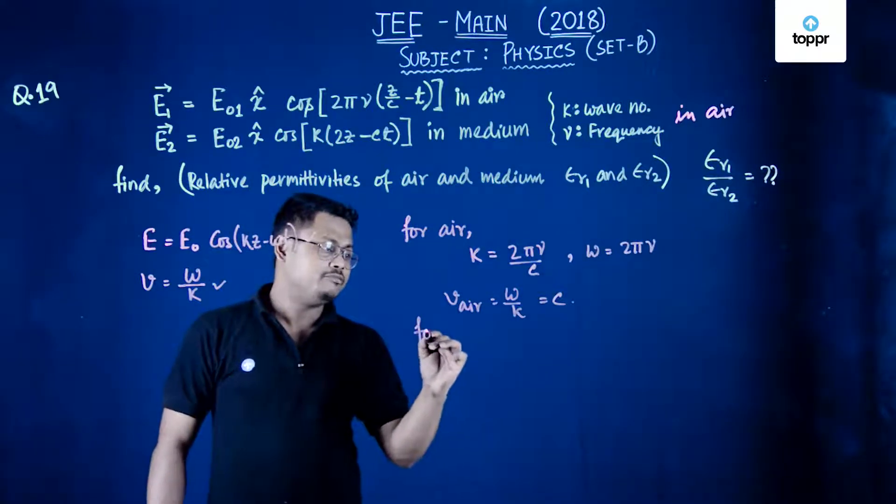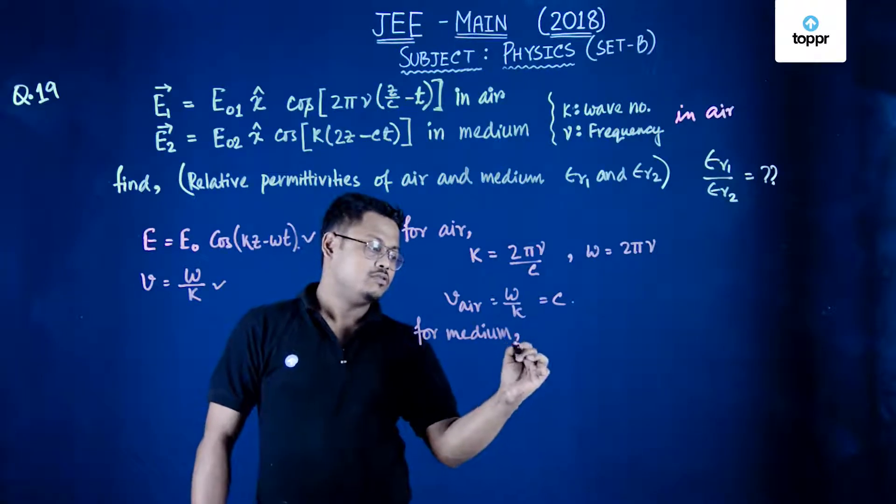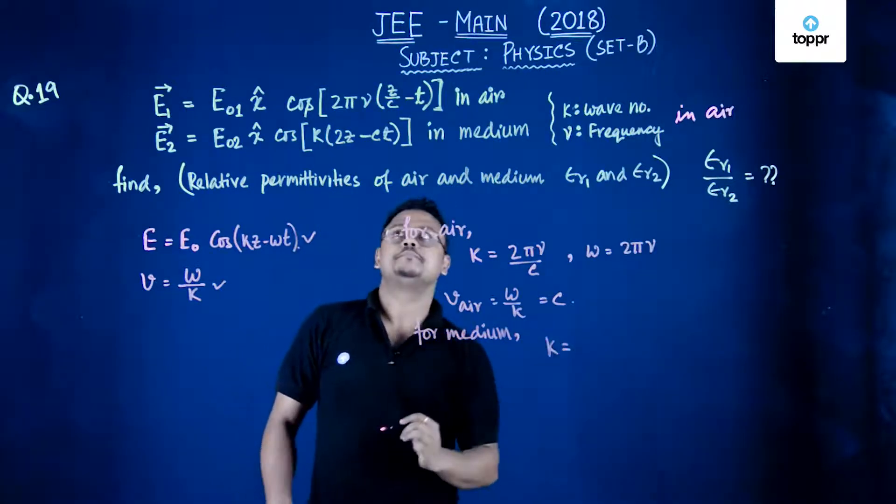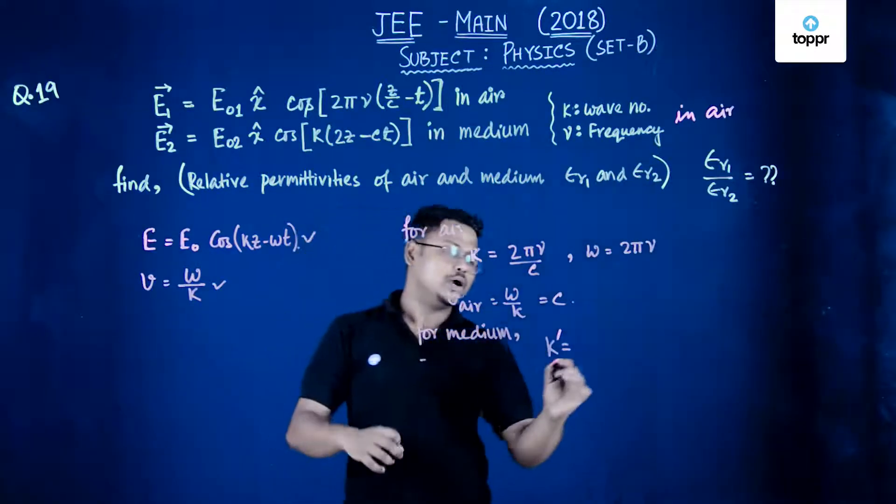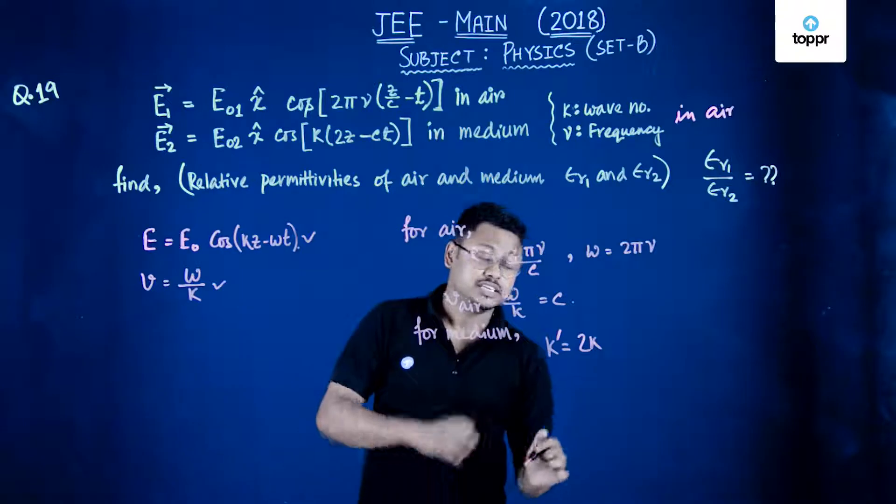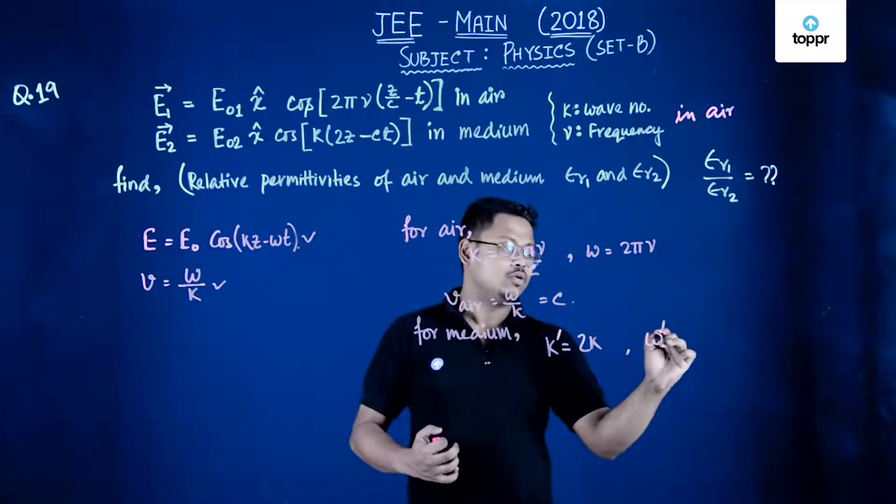Now we will compare, we will find the velocity for medium. For medium the value of k is equal to k is equal to k dash. So k dash will be equal to 2 times k that is 2 times of the wave number in air and let's call it omega dash.